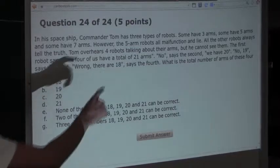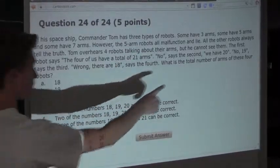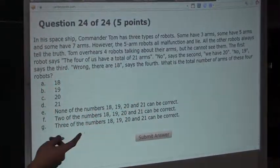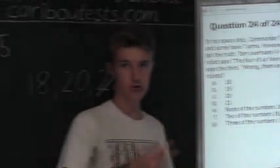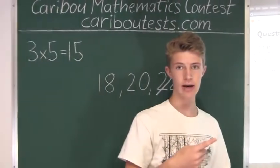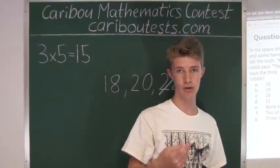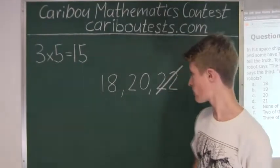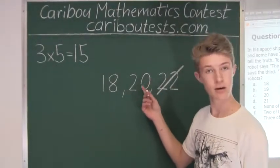But now, let's look at the statements. We can see that one of the statements says we have twenty. But, that can't be true because that robot would have to be lying, and therefore none of them could say twenty. Therefore, we know that the fourth robot cannot have five arms.